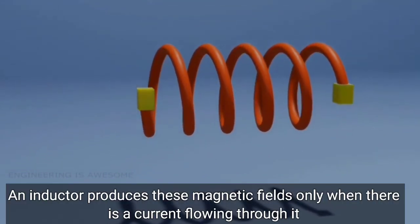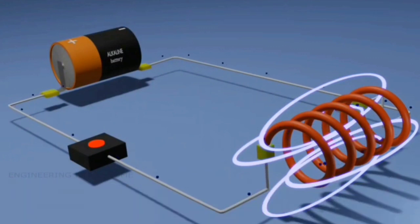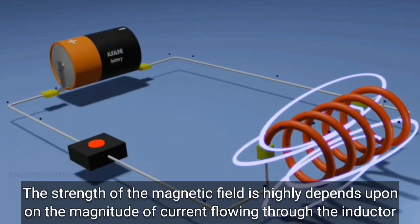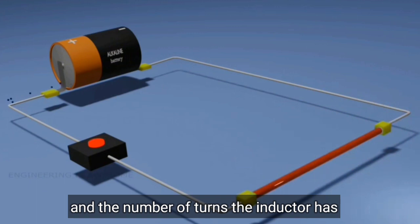An inductor produces these magnetic fields only when there is a current flowing through it. The strength of the magnetic field highly depends upon the magnitude of current flowing through the inductor and the number of turns the inductor has.